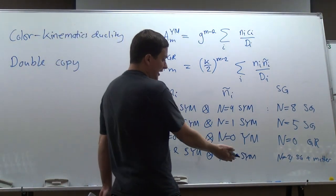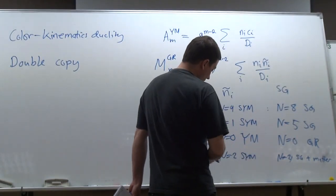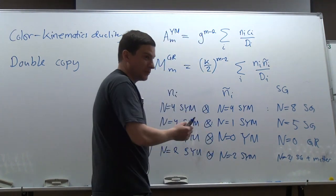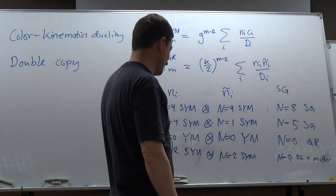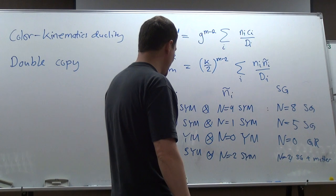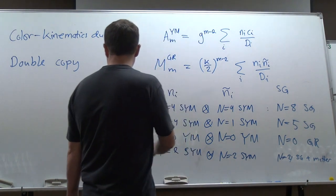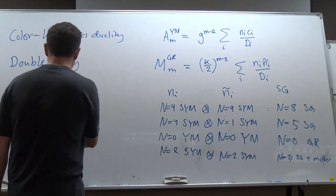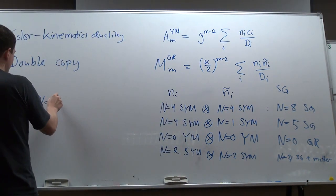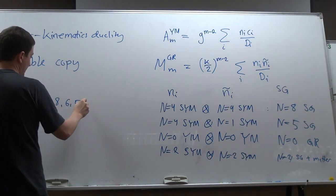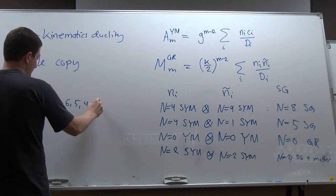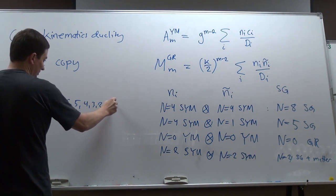This is a reflection of the fact that when you start having N=4, there's more than one way of doing things. The values of N that exist are: N=8, 6, 5, 4, 3, 2, 1, 0. N=7 is missing for an obvious reason — if you try to do N=7, it adds up to N=8 by CPT variance or by adding two multiplets.